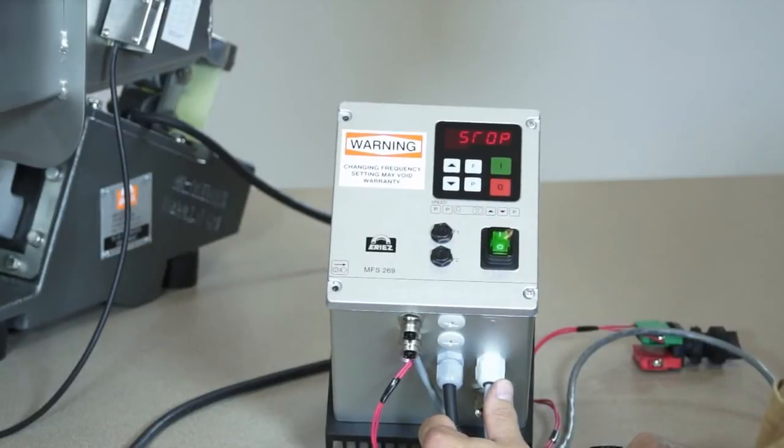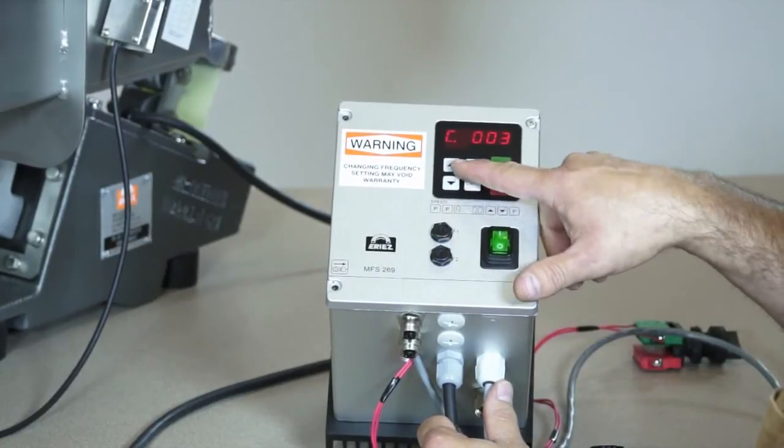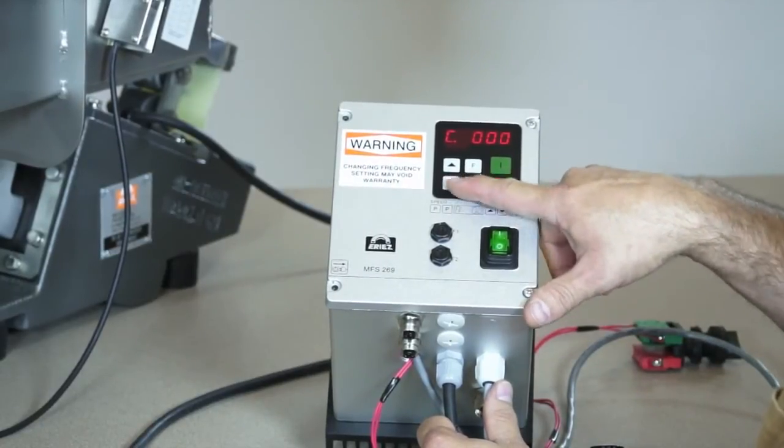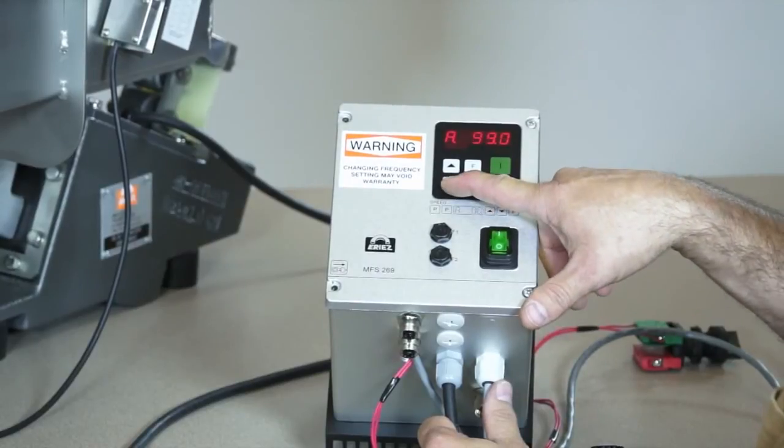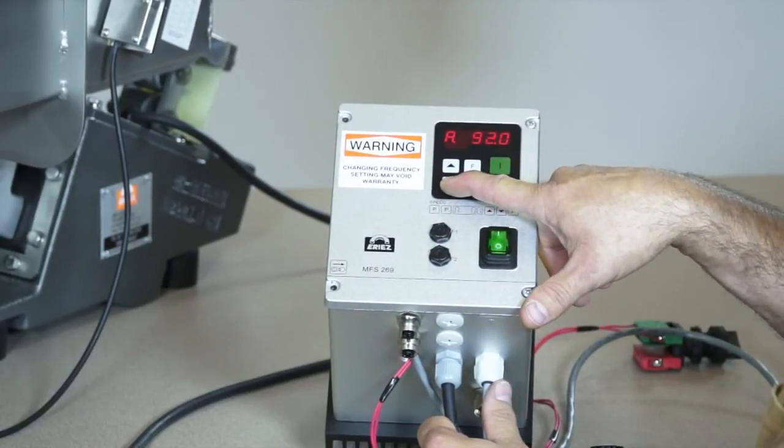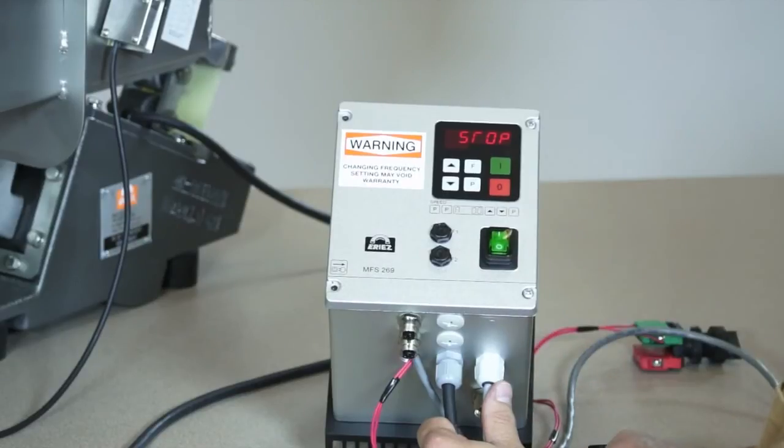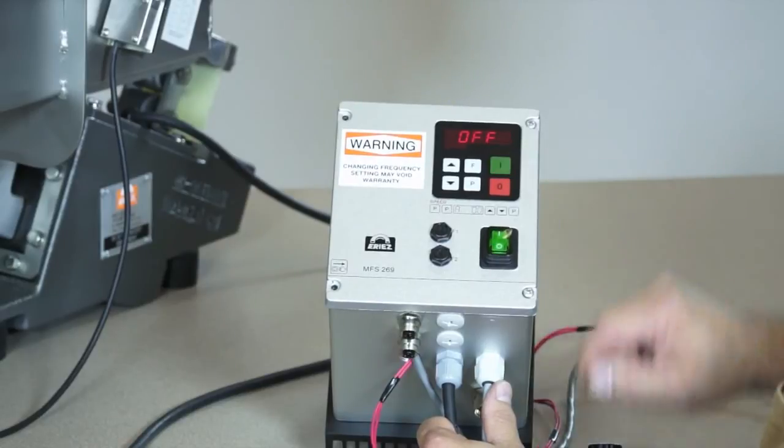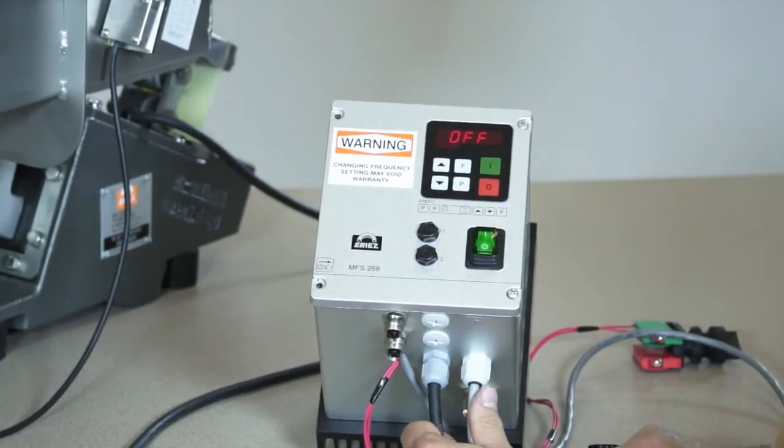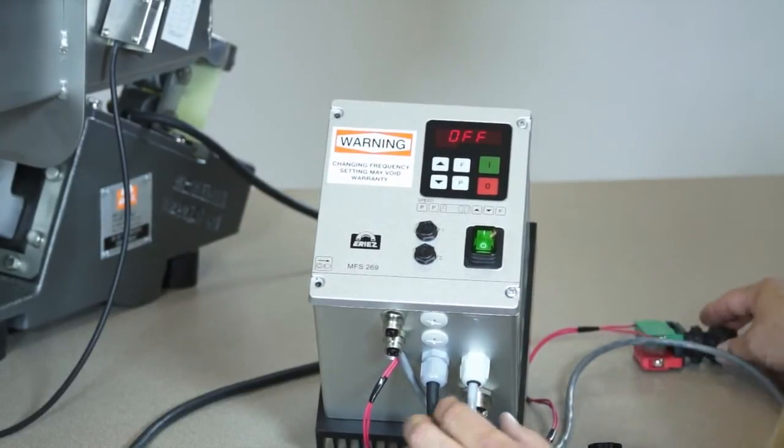Go to code 000 and set the amplitude A to 0.00 and press P until we are at the running mode again. The display will read STOP. Press the green I button. The display will read OFF. Now the feeder can be started and stopped and the amplitude adjusted from a remote location.